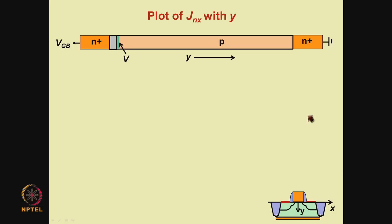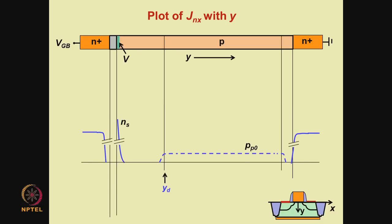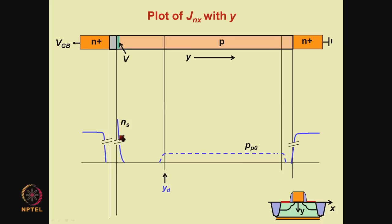Here is the section of the device rotated by 90 degrees so that the spatial axis is horizontal. In this diagram, the x direction would be from one end to the other, so vertically upwards. To plot the current density, we must look at the electron concentration. The distribution of the electron concentration is as follows — I am repeating a slide from the previous lecture. This is the concentration of electrons in the inversion layer as a function of distance.